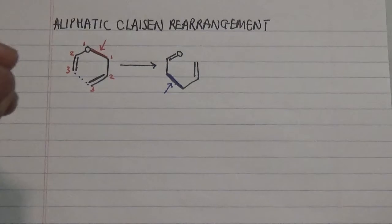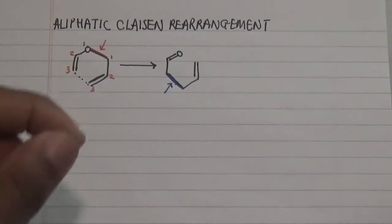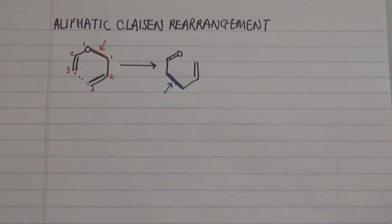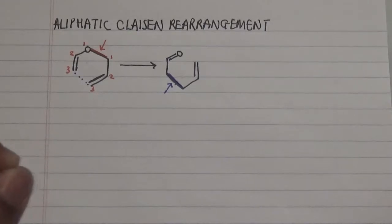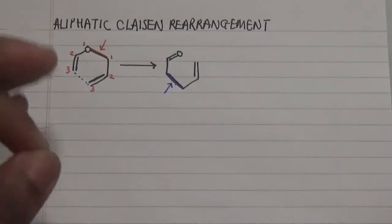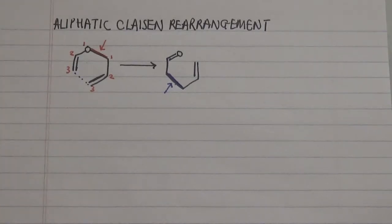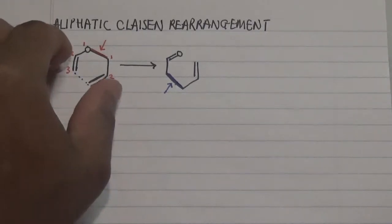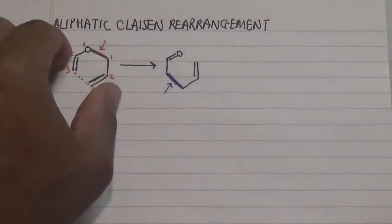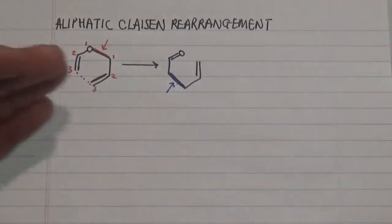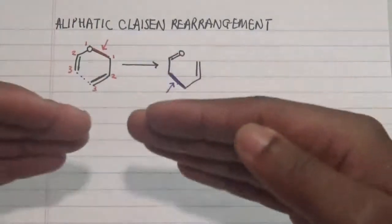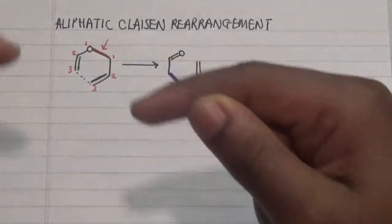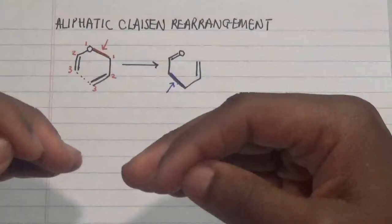This rearrangement happens via a chair-like transition state. It's important to recognize the chair transition state occurring here, which leads to the formation of our new sigma bond as a result of orbital overlap.